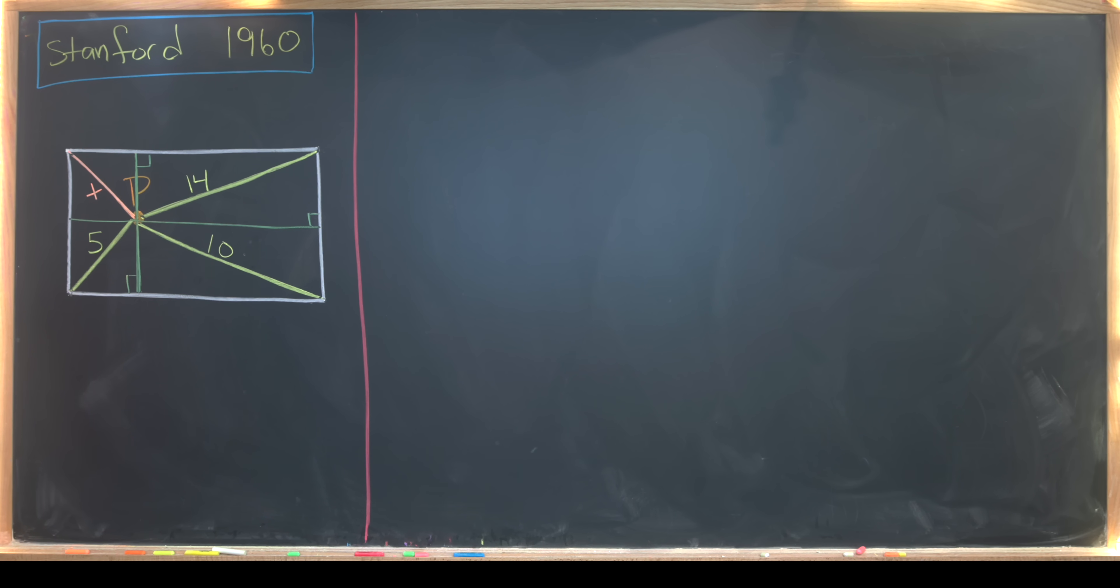Now let's maybe give some names to these side lengths. So maybe we'll call this one w1 for like width one, this one w2 for like width two. In other words, the width of the entire rectangle is w1 plus w2.